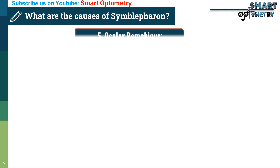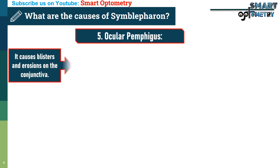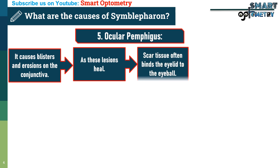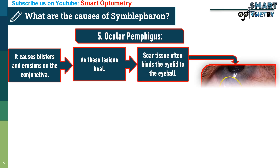5. Ocular Pemphigus: ocular pemphigus causes blisters and erosions on the conjunctiva. As these lesions heal, the scar tissue often binds the eyelid to the eyeball, forming Symbolpheron.